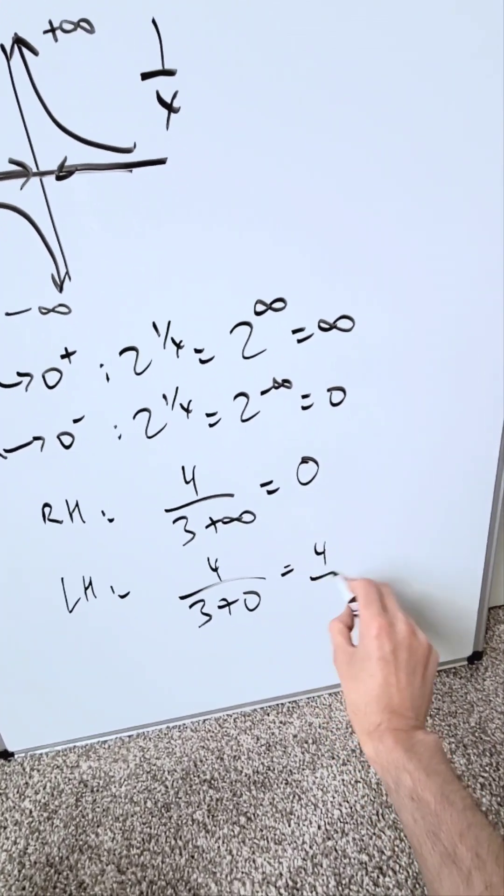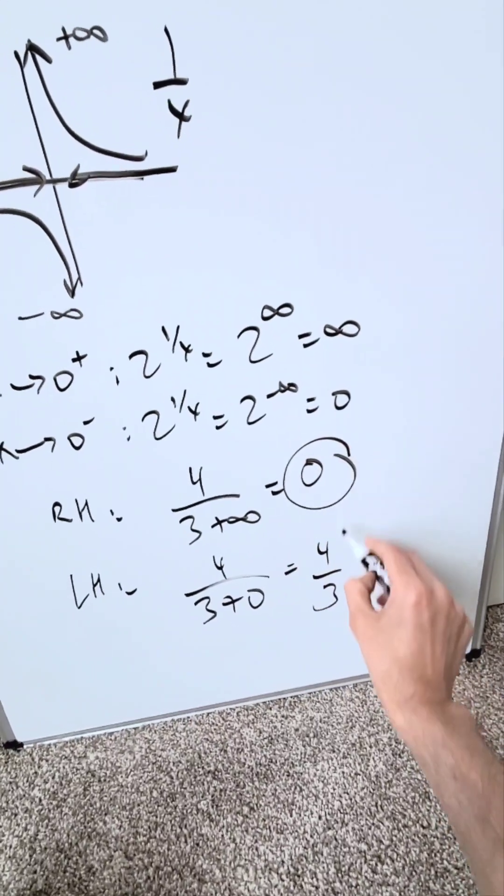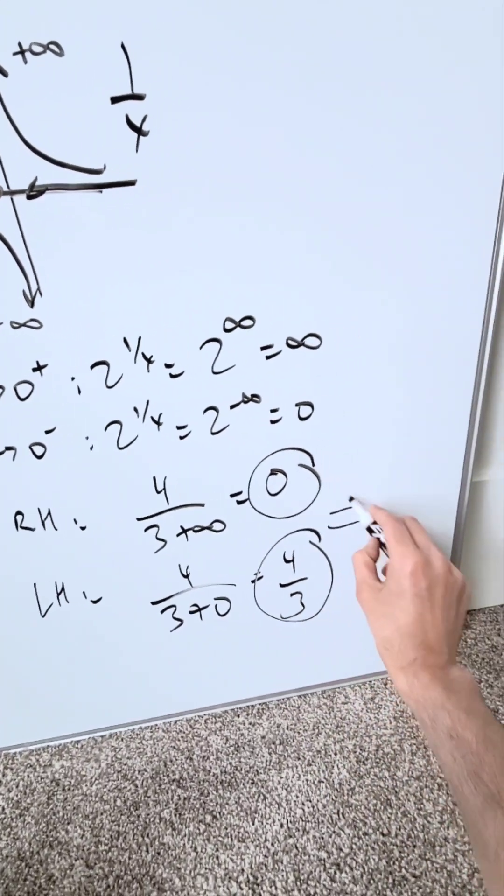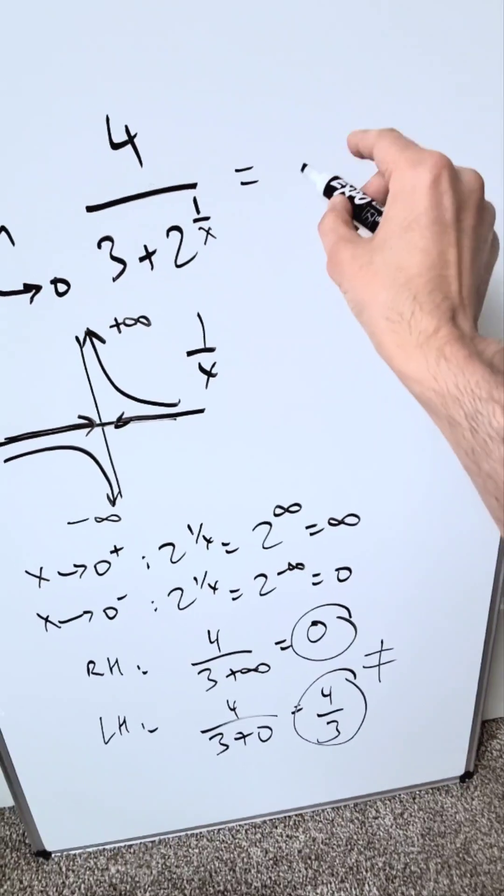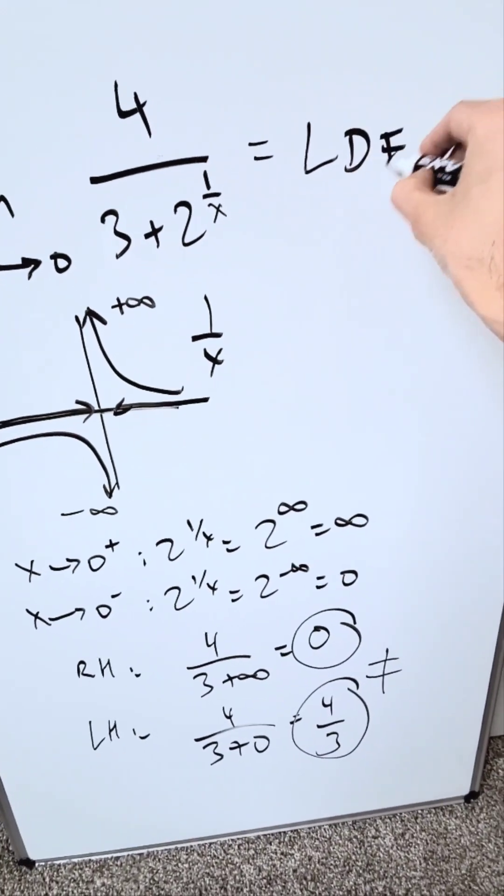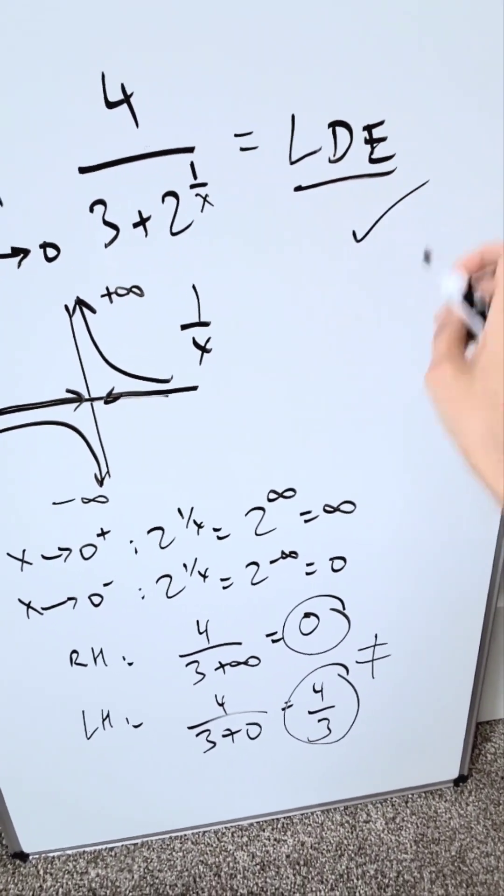I'm seeing the right hand limit and the left hand limit are not equal to each other. Hence, your outcome here for this must be limit does not exist. And that would be a good answer.